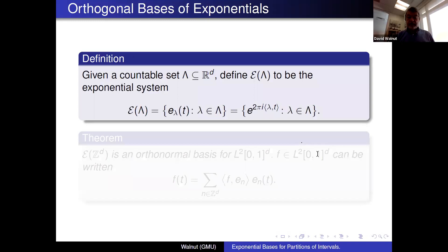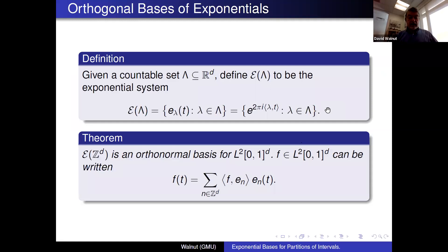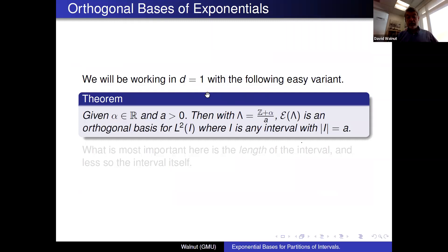Given a countable set Λ in ℝ^d, we define E(Λ) to be an exponential system. To begin with something everybody knows: if Λ is the integer lattice, then E(Λ) is an orthonormal basis for L²of the unit cube in ℝ^d, and we can expand any function in its Fourier series. For this talk we'll be working in one dimension, and we'll be looking at a trivial variant: if we take a shift and dilation of the integers, the corresponding system is an orthogonal basis for L² of I, where I is any interval of length a.